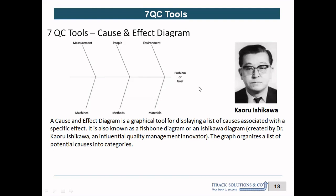The effect — or in other words, the problem — will be written at the head of the fish. This section is called the head of the fish. The reasons for this problem will be identified through an exercise called a brainstorming session, and once identified they will be categorized into six M's: Man, Mother Nature, Measurements, Machine, Method, and Material. This is how you draw a fishbone diagram.